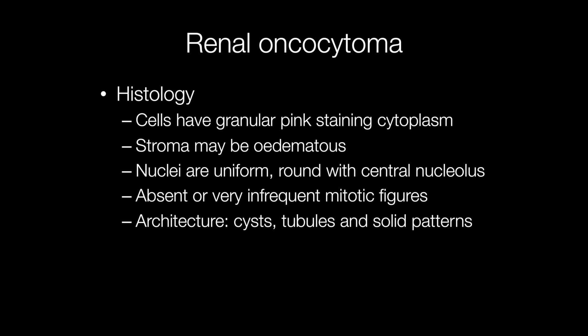Histologically, renal oncocytomas have, as the name implies, a granular pink staining cytoplasm. The stroma of the cells may be oedematous and the nuclei are uniform and round with a central nucleolus. Architecturally, the tumour may show cyst formation, tubule formation, solid areas, and also alveolar areas.